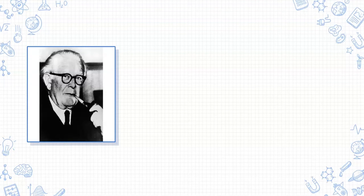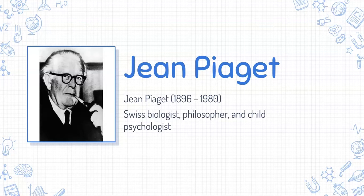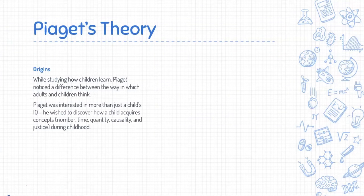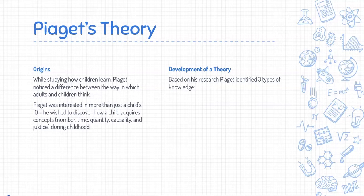Jean Piaget was a Swiss biologist, philosopher, and child psychologist in the 1900s. He studied childhood learning and cognition. While observing his own children, he noticed that children seemed to think in a different way than adults. But he wasn't just interested in their IQ — he wanted to understand how a child acquires knowledge and concepts such as number, time, quantity, and even justice.